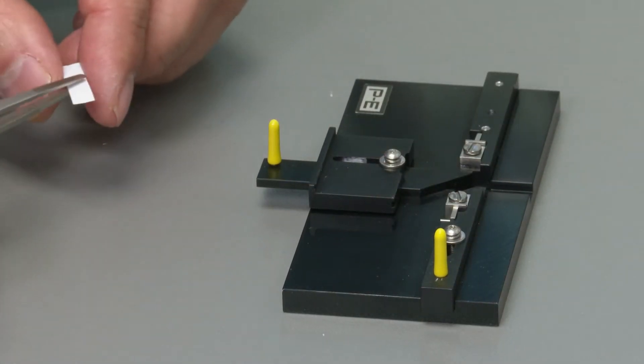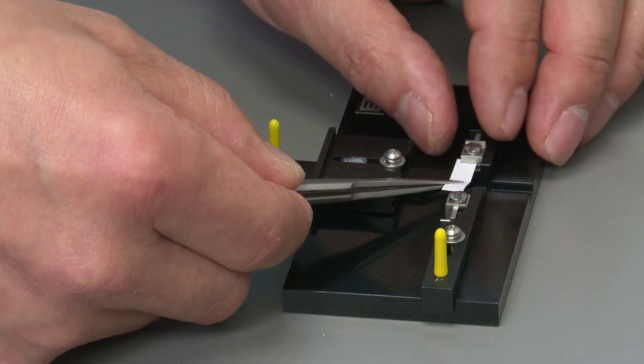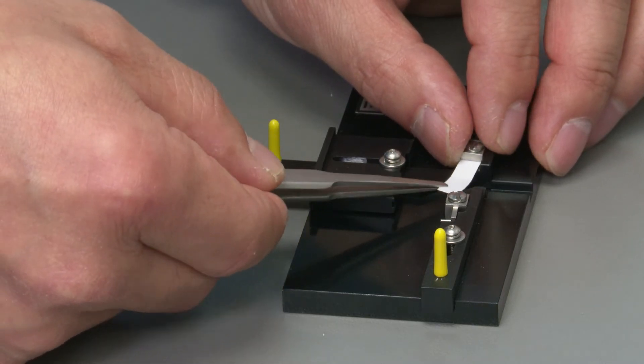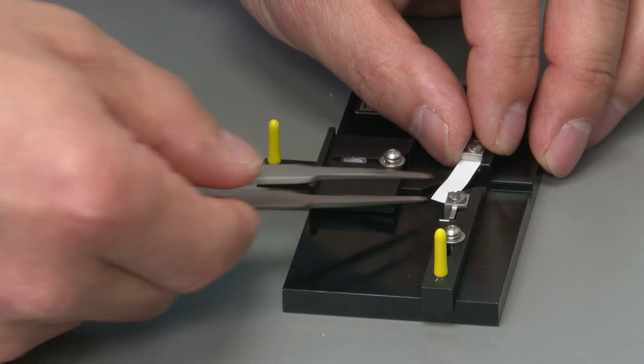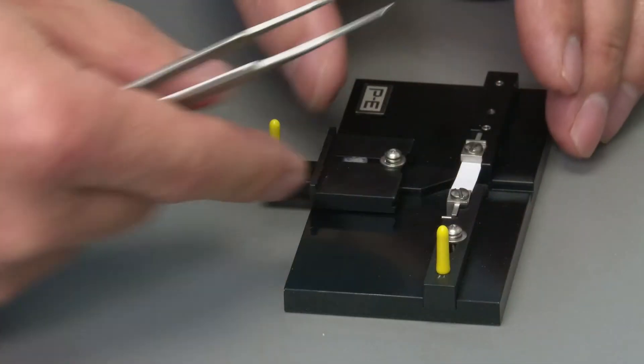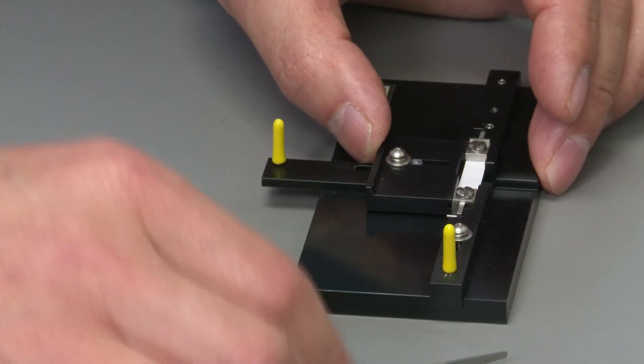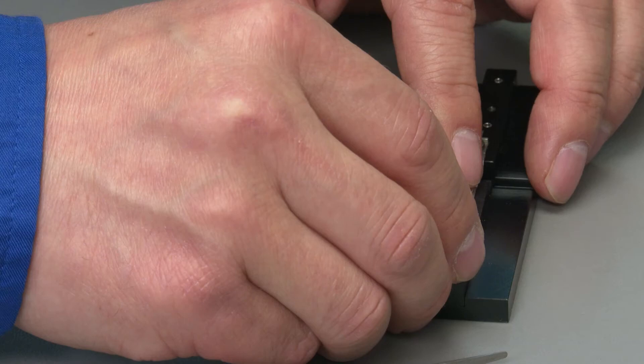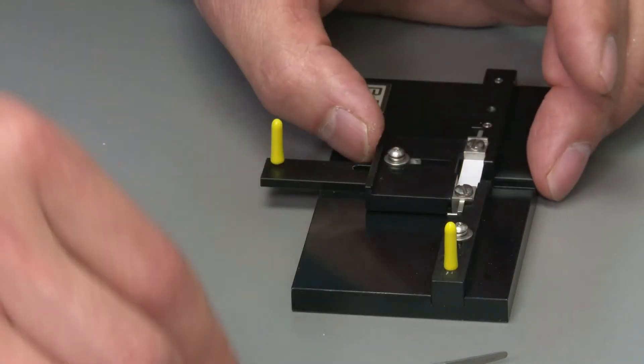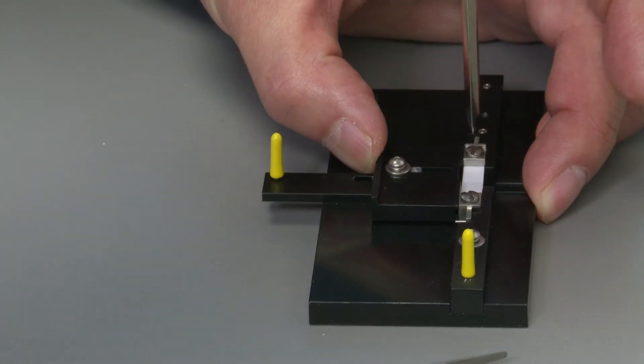Then you can slide your sample between the two clamps and adjust the length and tighten these screws.